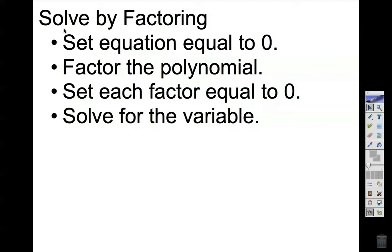We're going to set the equation equal to zero. We're going to factor the polynomial, whether it's on the left or on the right side of the equal sign. We're going to set each factor equal to zero. So once we factor, we have some type of polynomial times polynomial, and we're going to set them equal to zero and then solve for the variable those two different times.